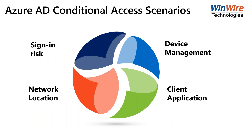Different scenarios for conditional access include sign-in risk, network location — where you can have one policy for users on the corporate network and another for outside, down to a single IP address — device management policies whether a user is coming in via laptop, Mac, PC, phone, or tablet. Conditional access in conjunction with Microsoft Intune can be even more granular, setting policies based on operating system type. Different client applications are supported too, whether Office 365, SaaS applications, or other applications within the Microsoft ecosystem.